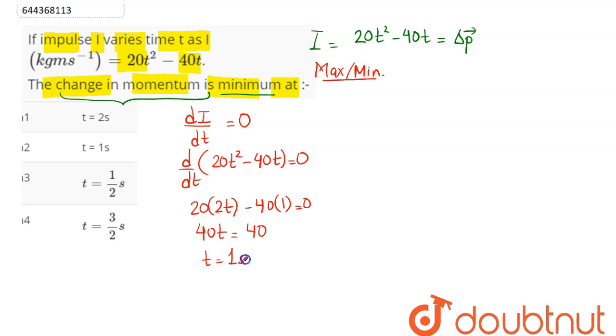Now at t = 1 second, there exists either maxima or minima. So to determine this, we double differentiate, that is d²I/dt². Hence, this is written as d/dt of dI/dt.